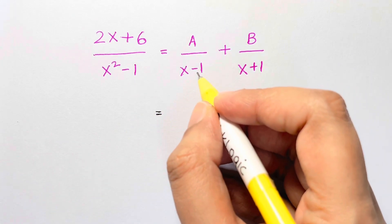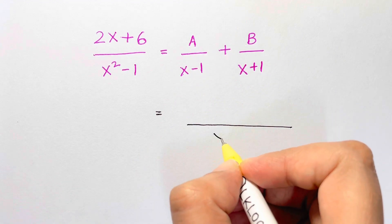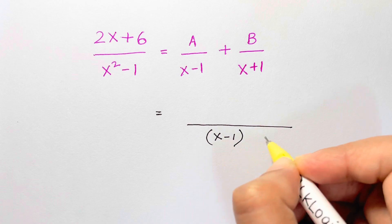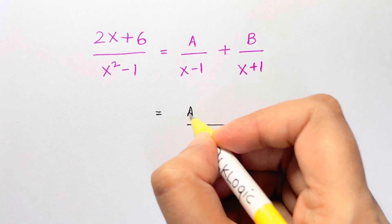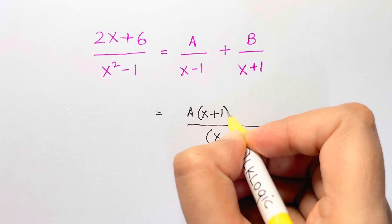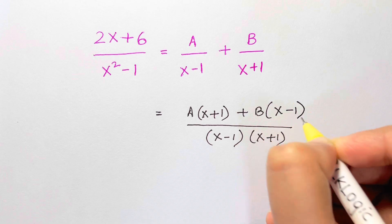Let's see what we have here: x minus 1 and x plus 1. So I'm just going to take the LCM, that's x minus 1 times x plus 1. So here I'm going to get A times x plus 1 plus B times x minus 1.